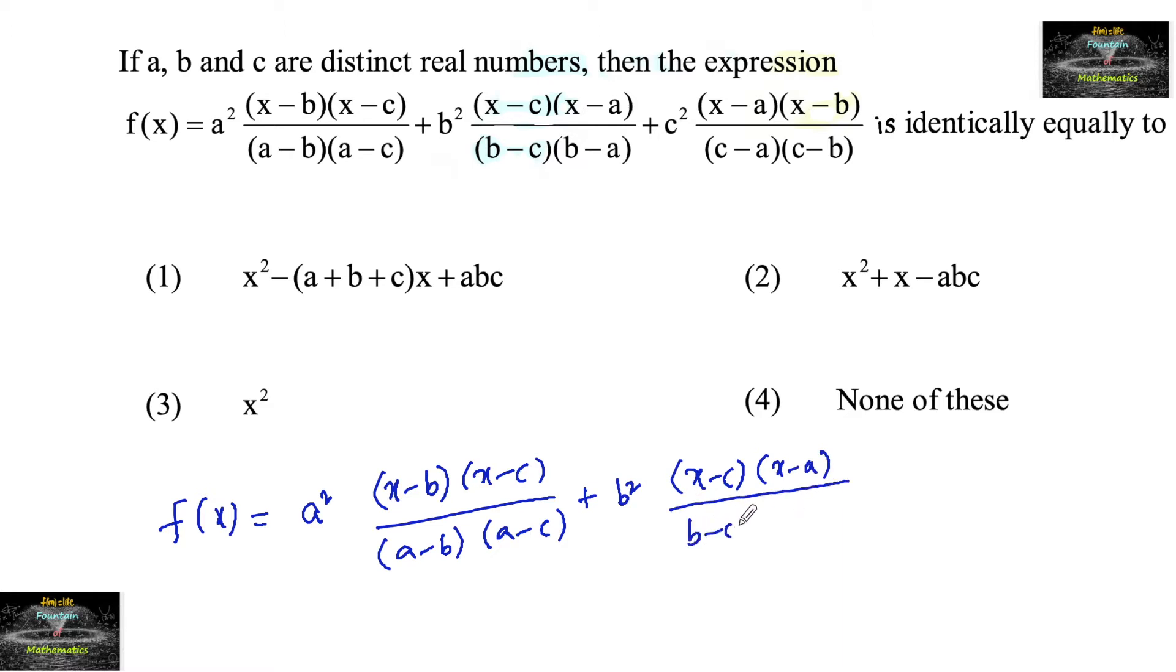divided by b minus c times b minus a, plus c squared times x minus a times x minus b divided by c minus a times c minus b, is identically equal to one of the expressions.